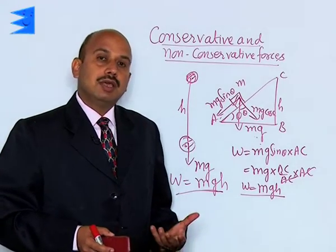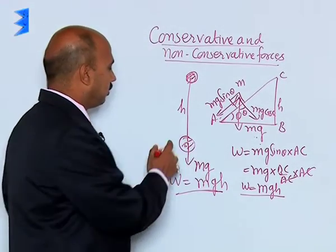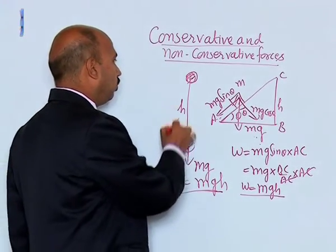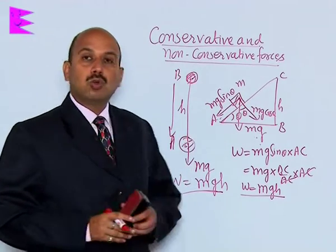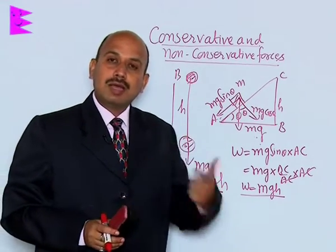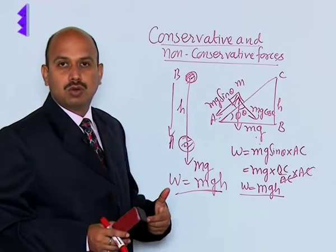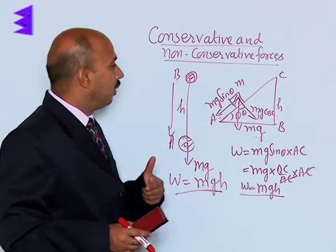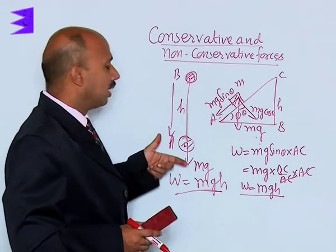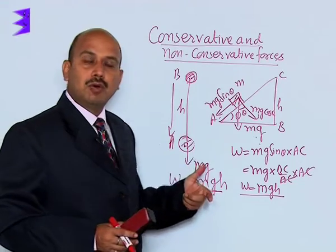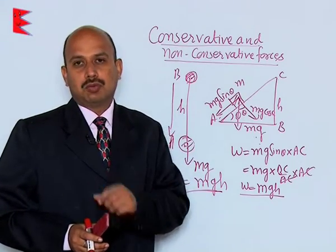Similarly, if you are taking a body from a to b and then coming back from b to a, the total work done by the conservative force in a round trip is zero. So if you go from a to b and return to point a, the total work done by the conservative force is zero.